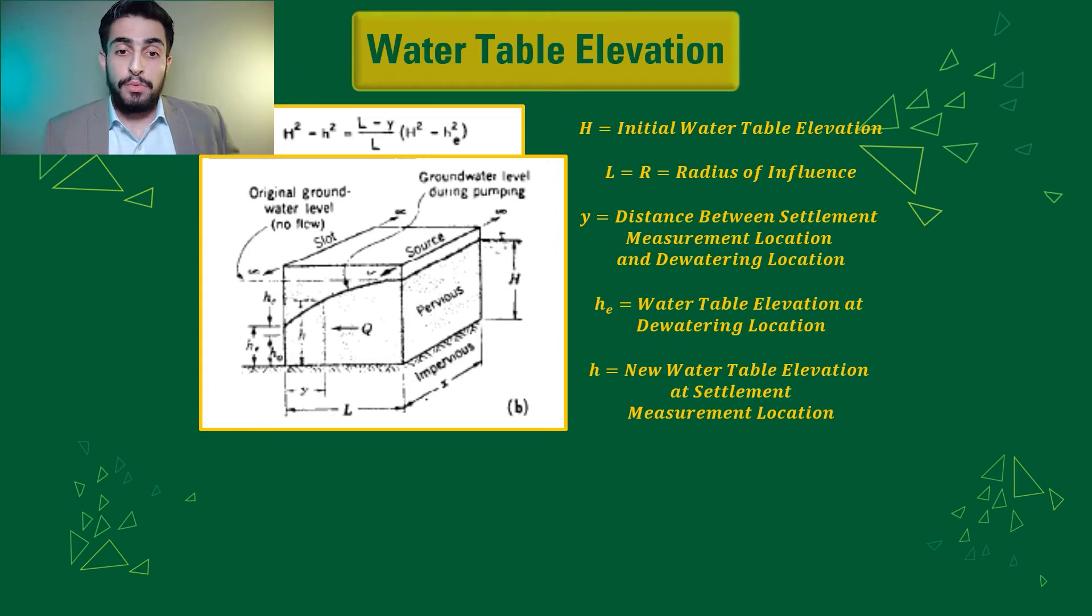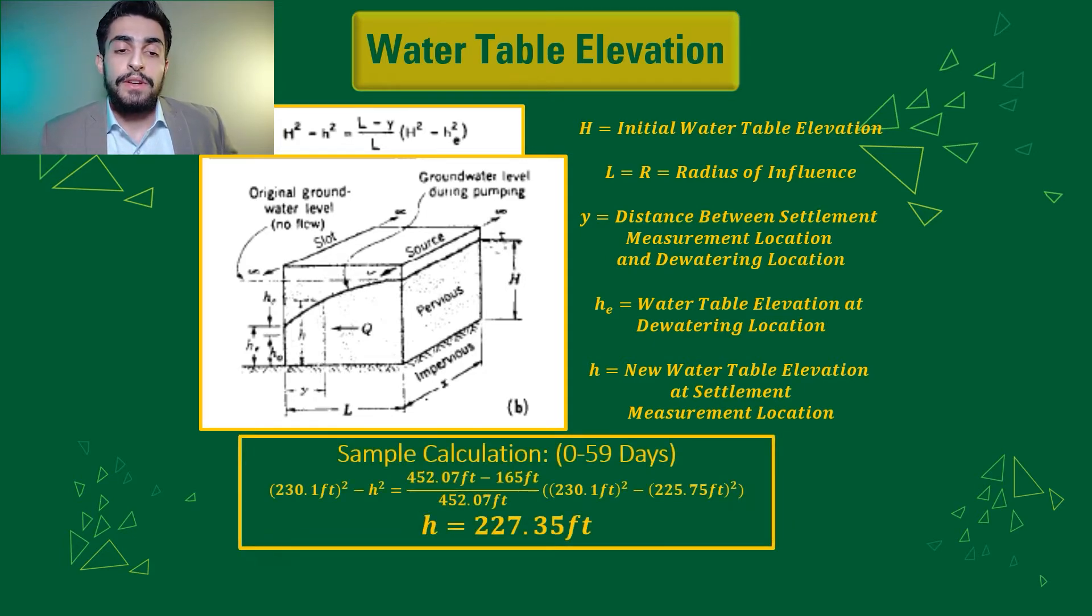H E, this time, is water table elevation at dewatering location. And H is new water table elevation at settlement measurement location that we are looking for. And this equation is found from the dewatering manual as well. For calculation for the first period for water table elevation, it was found to be 227.35 feet.